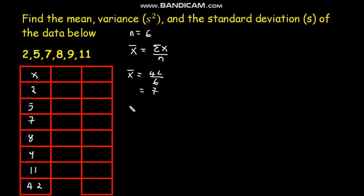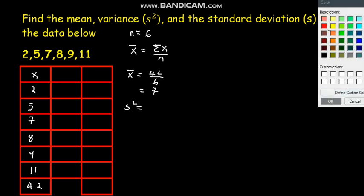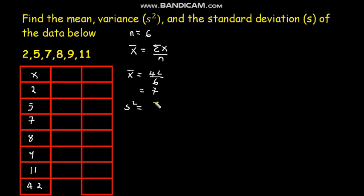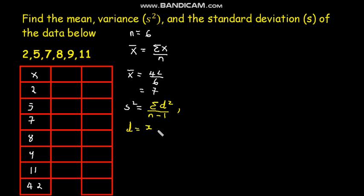The sample variance is calculated from the formula: sample variance s² is equal to the summation of the deviation squared divided by the number of samples minus one. The deviation is the difference between the x values, or the samples, minus the sample mean.